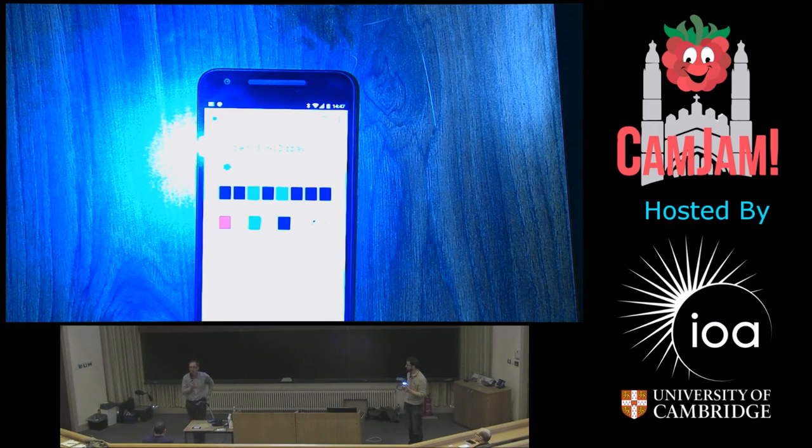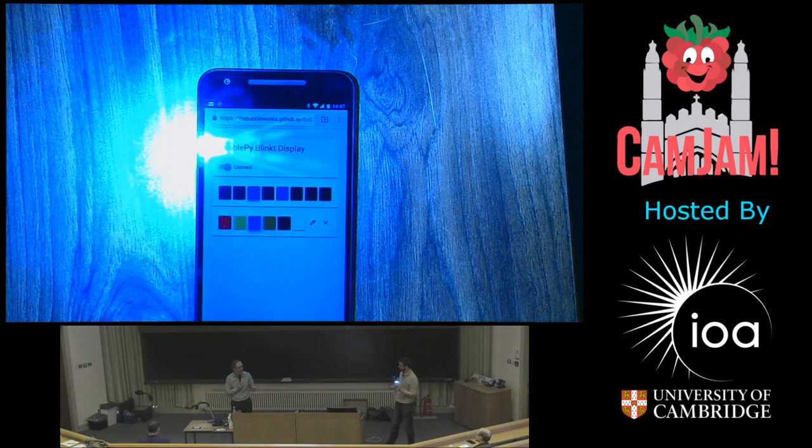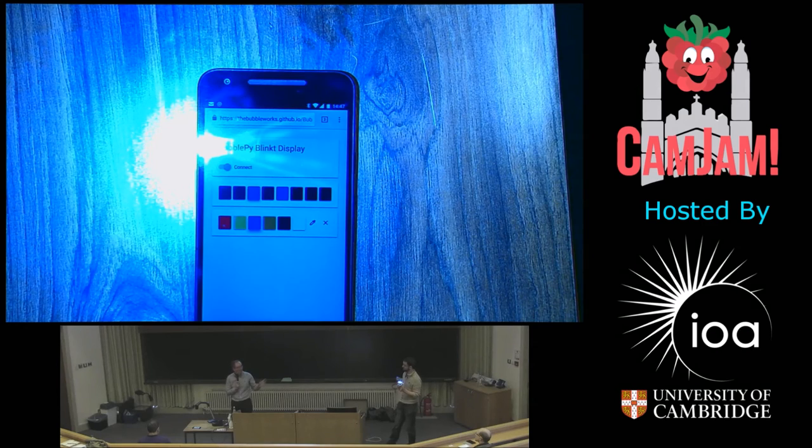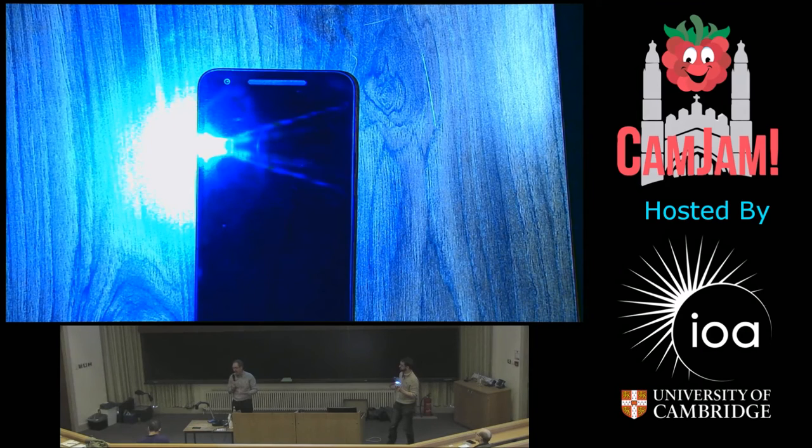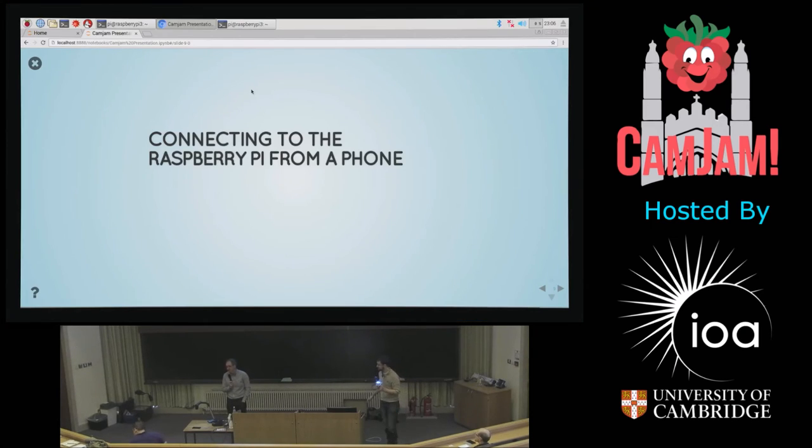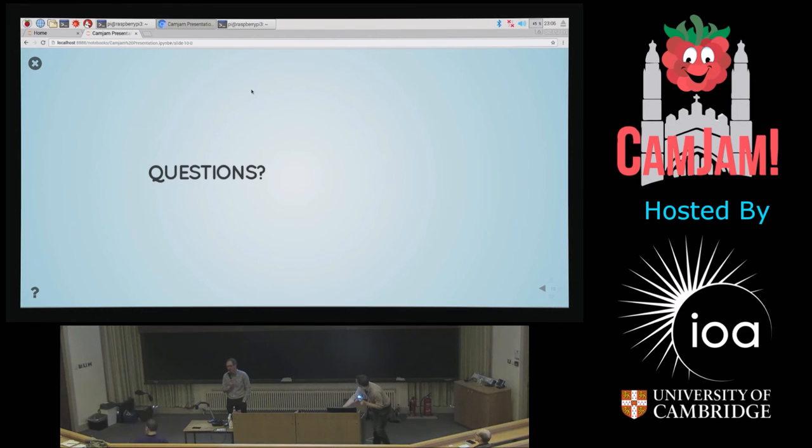So that was what we were going to demo today. So we had a few hiccups along the way. But what I think you can see is that what we're trying to do is get a very simple interface that you can write in Python that would allow you to connect between the Raspberry Pi and different combinations of things. So, questions?